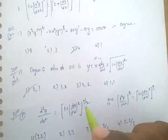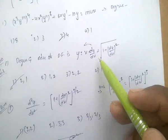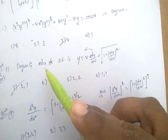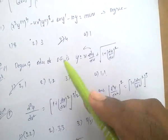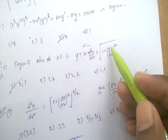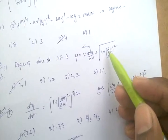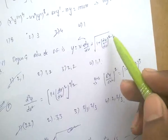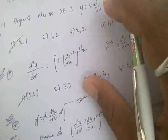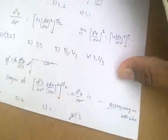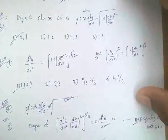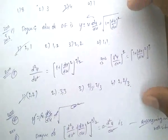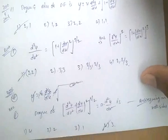Here are some examples. In this problem, dy/dx is the highest derivative, so order is 1. And degree is the power of the highest derivative: 2. In the next two problems, squaring on both sides gives the same answer.